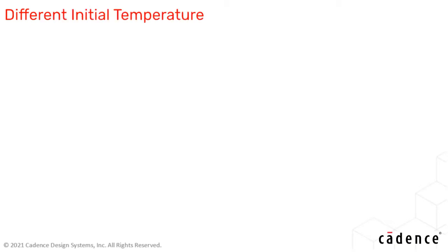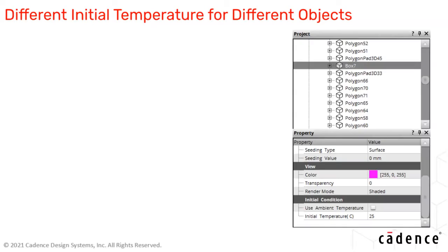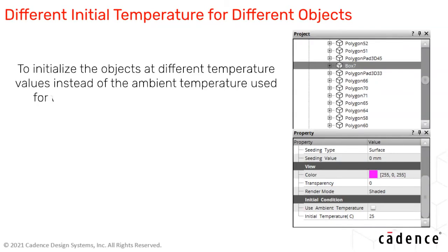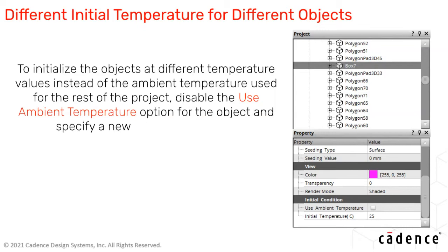You can now specify different initial temperature values for different objects in the design. To initialize objects at different temperature values instead of the ambient temperature used for the rest of the project, disable the Use Ambient Temperature option for the object and specify a new temperature value. During analysis, the object is initialized at the specified temperature value instead of the ambient temperature.